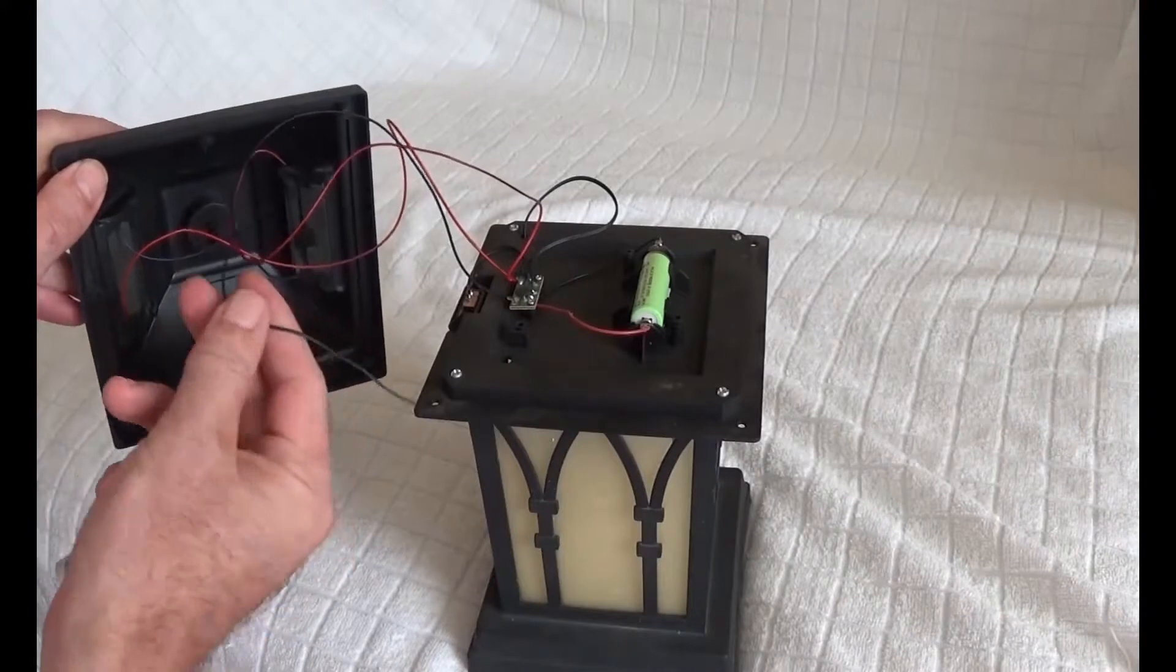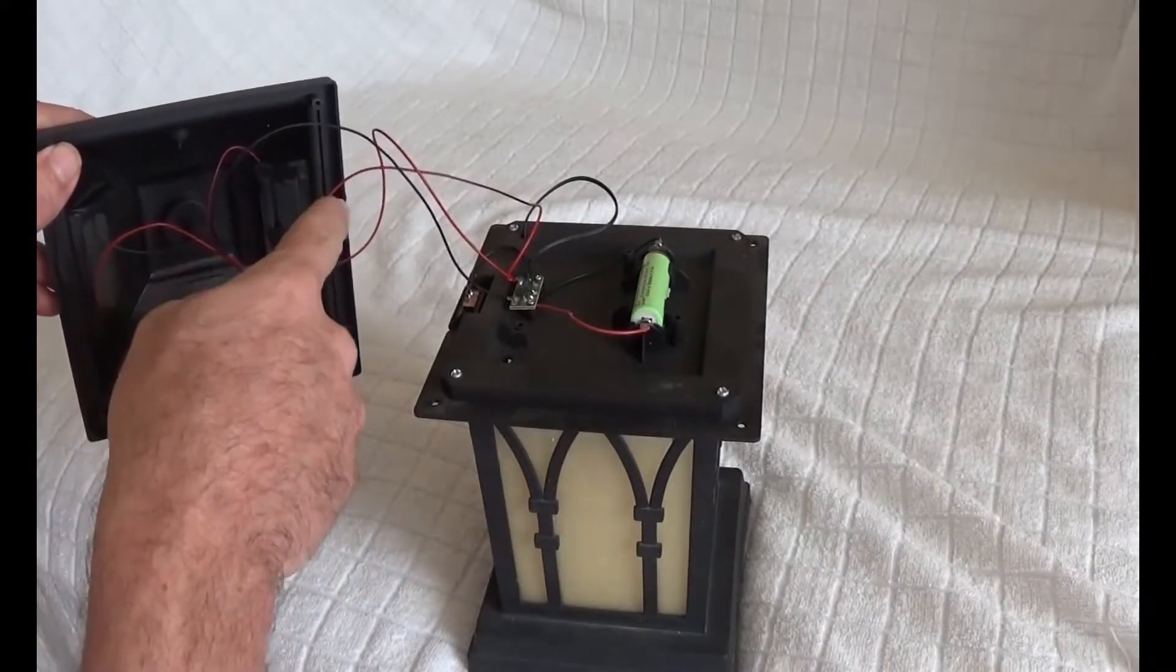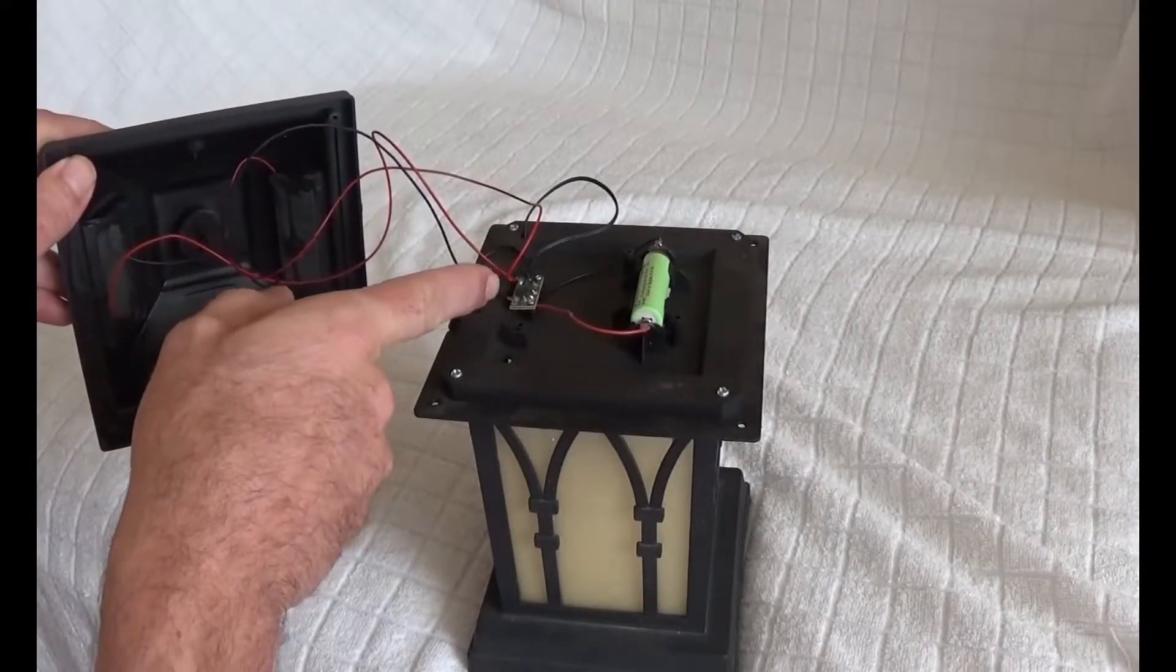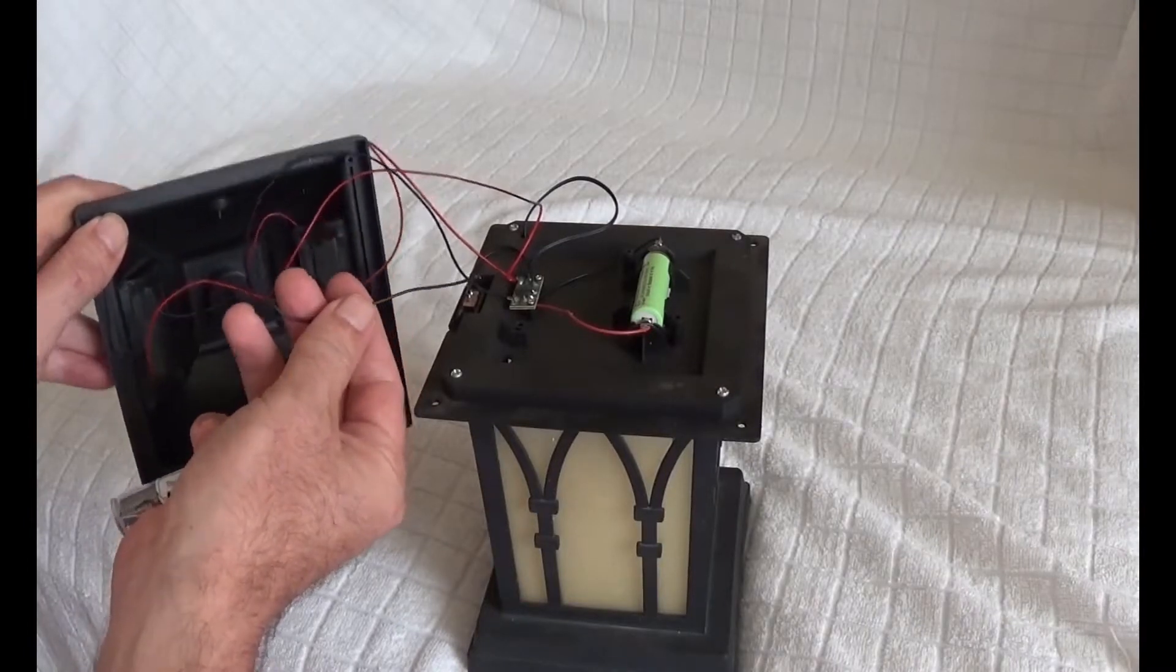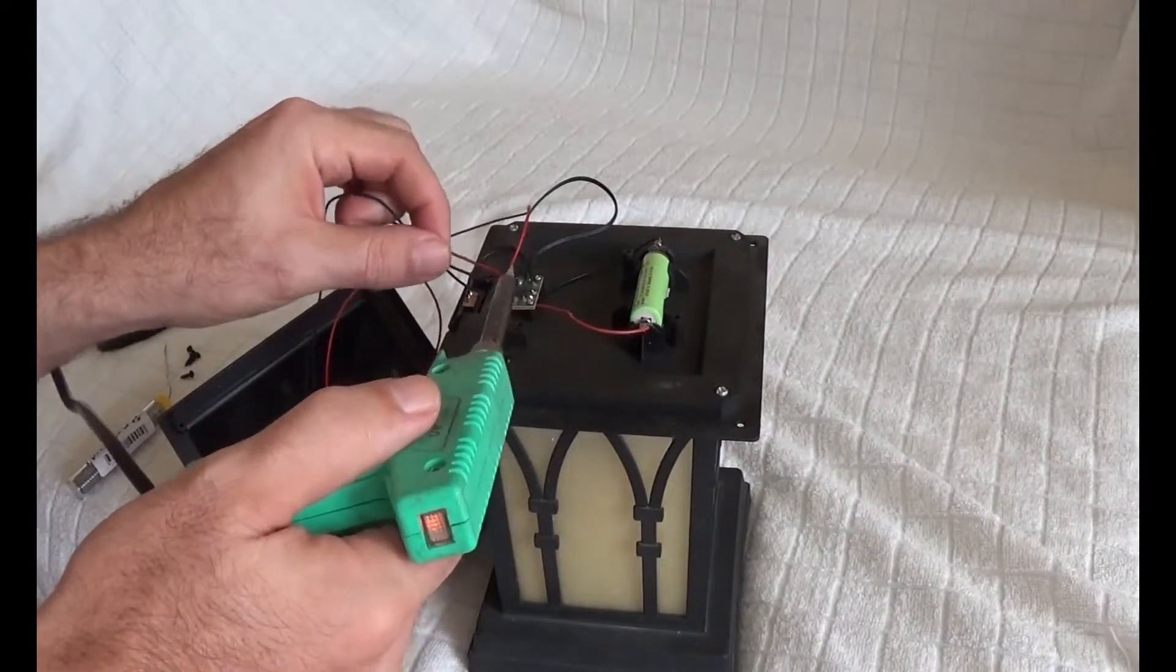Two wires lead from each solar panel, one red and one black. We see that two red wires are soldered together and only one black is soldered. So we will solder the second black wire together with the first.